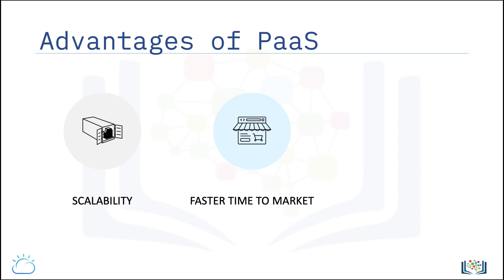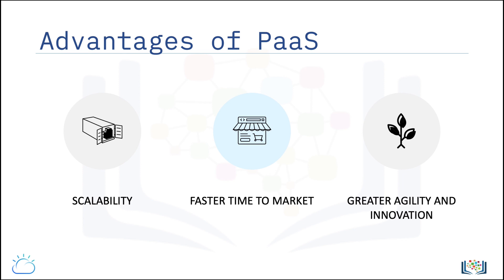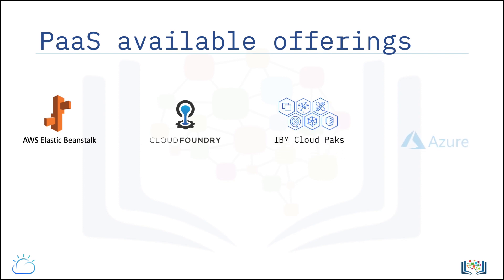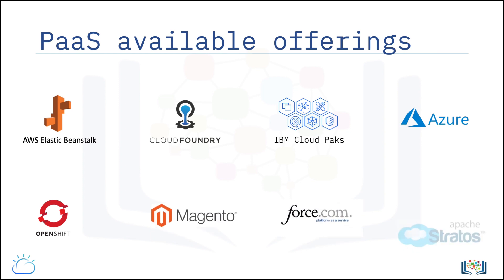Middleware capabilities also reduce the amount of code that needs to be written while expanding the application's functional capabilities. Greater agility and innovation, because using PaaS platforms means you can experiment with multiple operating systems, languages, and tools without having to invest in these resources. You can evaluate and prototype ideas with very low risk exposure, resulting in faster, easier, and less risky adoption of a wider range of resources. Some key PaaS offerings available in the market today include AWS Elastic Beanstalk, Cloud Foundry, IBM Cloud Packs, Windows Azure, Red Hat OpenShift, Magento Commerce Cloud, Force.com, and Apache Stratos.